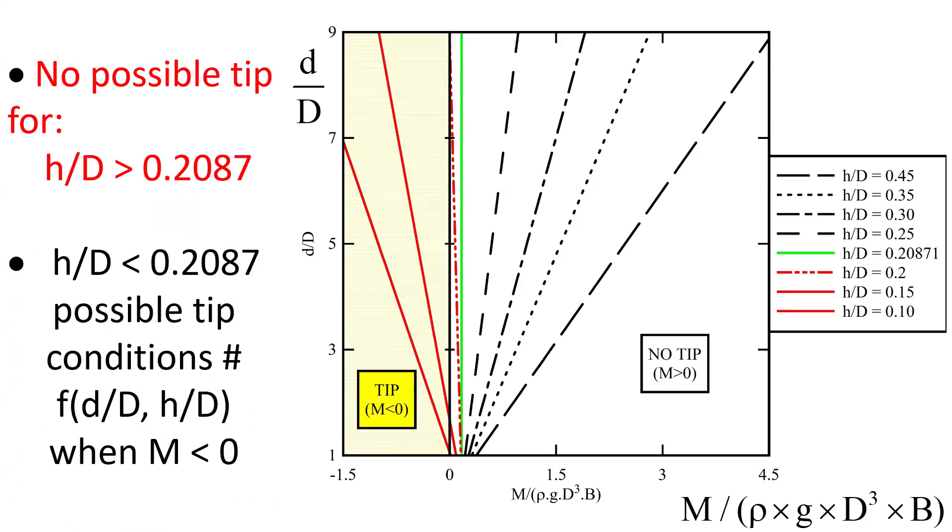We can see here that the gate tip is impossible when the relative location of the hinge is more than 21%. When the relative location of the hinge is less than about 21%, tipping conditions are physically possible, but will be a function of the relative water depth and relative hinge location when the moment is negative.